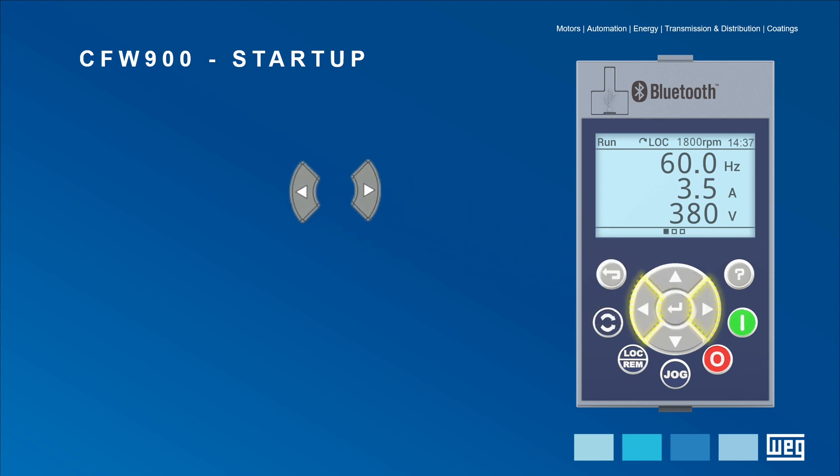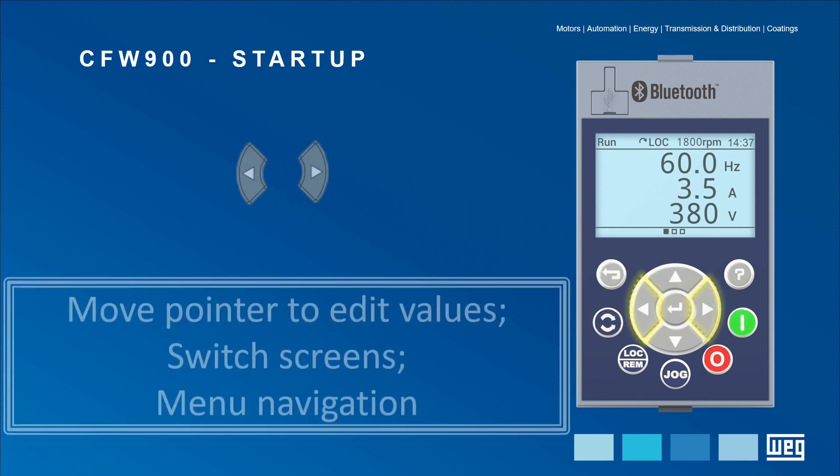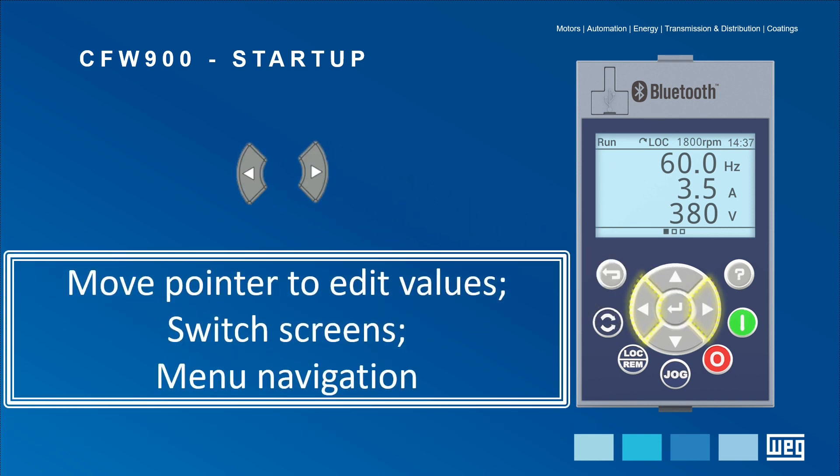Navigation also happens through the right and left arrow keys. Besides that, they are also used to move the pointer when editing parameter values, or to switch between different screens.